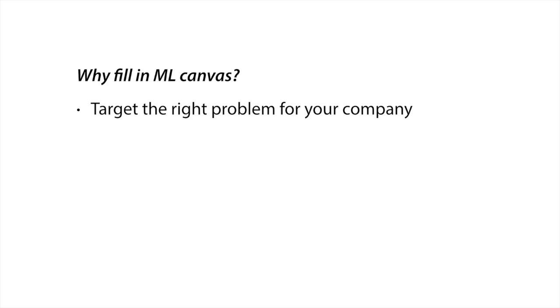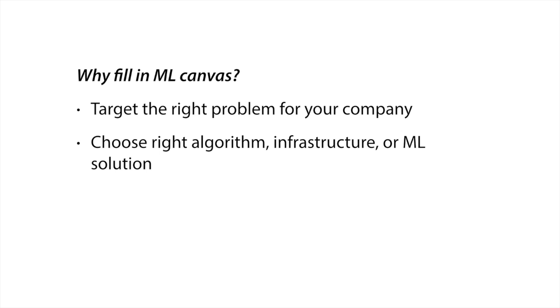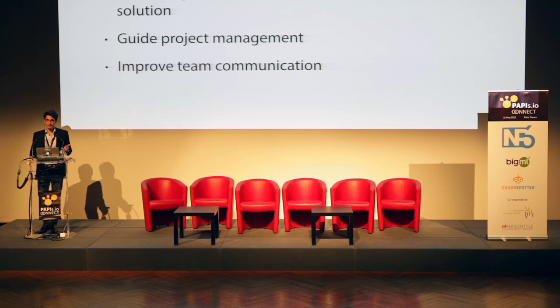A couple of reasons to use the machine learning canvas: by connecting to the value proposition, it ensures you're targeting the right problem for your company. By listing all key aspects and constraints on predictions and learning models, you can choose the right tools and solutions. It also shows what's going to be more difficult — is there already good data or is there a lot of work needed? And it's a document that can be used by both business people, technical people, engineers, and data scientists, which improves team communication. You can find it at machinelearningcanvas.com — I've got a private beta version, sign up and you'll get it.